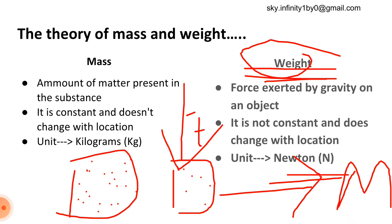We need to keep in mind that mass is always constant — it does not change with location. Whereas weight is not constant and it does change with location. Therefore, the weight of an object on Earth will be different from its weight on the Moon.